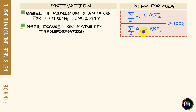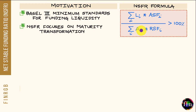The denominator is Required Stable Funding, calculated as the weighted sum of different categories of on-balance sheet assets and off-balance sheet exposures, weighted by Required Stable Funding factors (RSFs). As a rule of thumb, the more illiquid any given asset is — meaning the more difficult it is to liquidate in the event of a funding runoff — the higher the associated RSF.